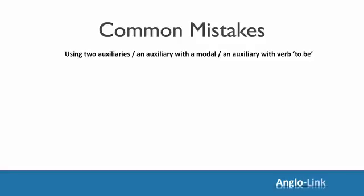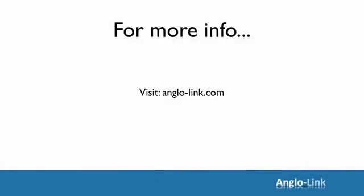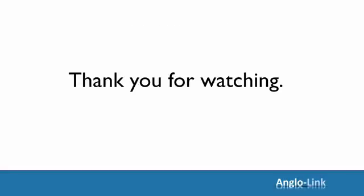And our final example: you might hear someone use an auxiliary with the verb to be. As you have seen, the verb to be makes the question itself. Simply: Was he on time? Well, that's all for this video. I hope you have enjoyed it. You can go to anglolink.com to read the explanations and do some exercises to review and reinforce this point. Thank you for watching. I look forward to seeing you in the next video. Bye now.